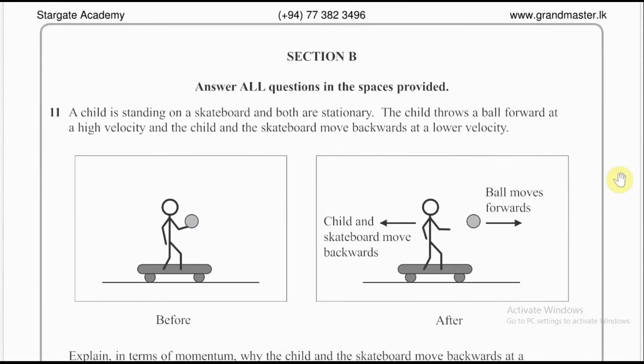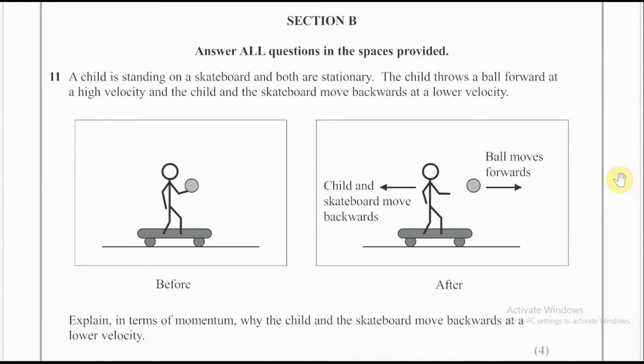Question 11. A child is standing on a skateboard and both are stationary. The child throws a ball forward at a high velocity and the child and the skateboard move backwards at a lower velocity.